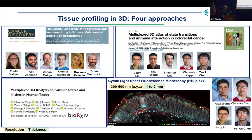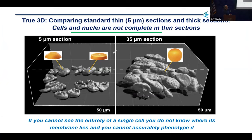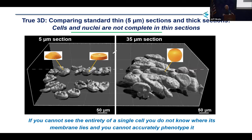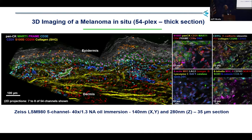One of the things we noticed as we moved to 3D imaging is that essentially all spatial transcriptomics and multiplex imaging of tissues uses a five-micron tissue section. As we used thicker and thicker sections, we realized almost no cells and almost no nuclei are intact in a five-micron section. You can see a thicker section with the intact orange nucleus. On average, epithelial cells in tissues are between 20 and 30 microns long, so you actually need a substantially thicker section to capture a whole cell.